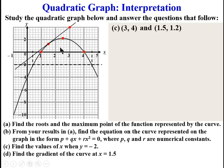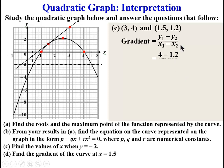So gradient is Y1 minus Y2 over X1 minus X2. Taking the point (3, 4) as (X1, Y1) and (1.5, 1.2) as (X2, Y2), we have Y1 minus Y2 = 4 minus 1.2, over X1 minus X2 = 3 minus 1.5. Simplifying this, we have approximately 1.842. That gives the approximate gradient of the curve at the point X equals 1.5.